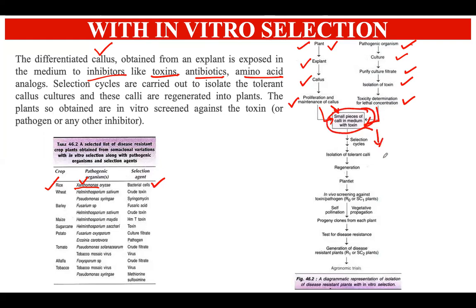After several selection cycles, you isolate the tolerant callus — the pieces able to survive in the toxin. Some cells will die because they can't survive the toxic conditions, but some will survive. You select those survivors, perform regeneration — root and shoot formation, then plantlet formation — grow them in soil, then do in vivo screening against the toxin. You grow the next line of plants, create progeny clones from each plant, and test again for disease resistance. Once you confirm the specific trait is present in the progenies, you select that plant and label it as a somaclonal variant.